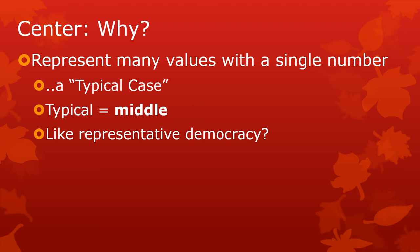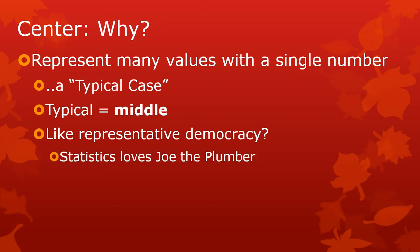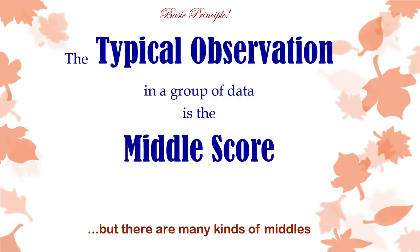This is much like representative democracy. Americans want to elect somebody to office who looks like they do, who acts like they do, who has their thoughts and their attitudes. You want your city councilor to represent your neighborhood, your governor to be somebody who grew up in the state. Statistics loves Joe the plumber — it loves the average.